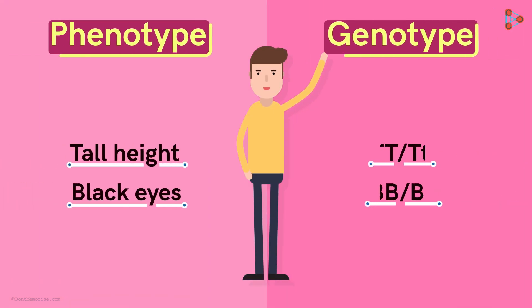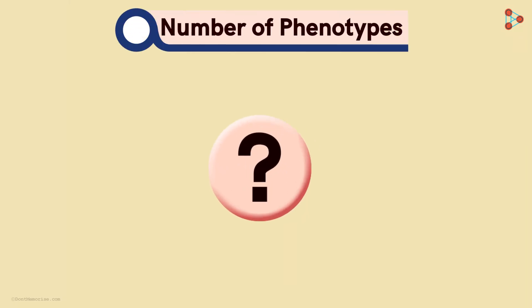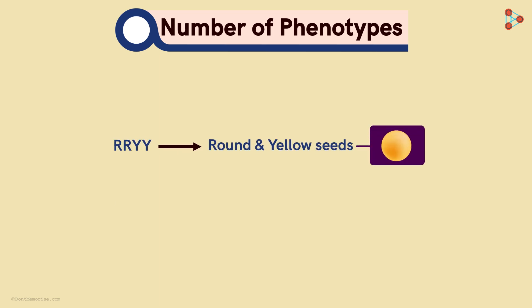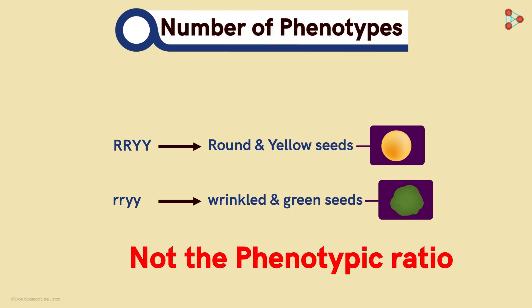Phenotype and genotype are the important concepts which we know pretty well! Now can you tell me how many phenotypes are obtained on crossing a homozygous plant having round and yellow seeds, with another homozygous plant having wrinkled and green seeds? We want the number of phenotypes and not the ratio!